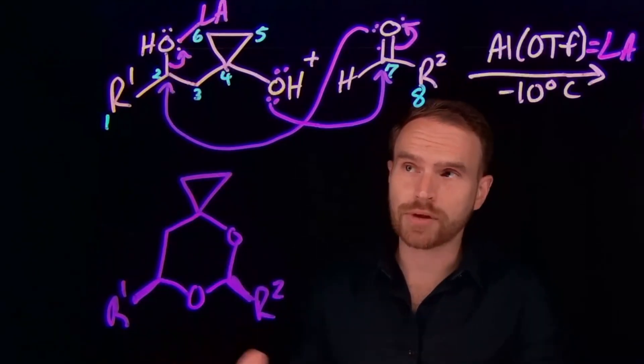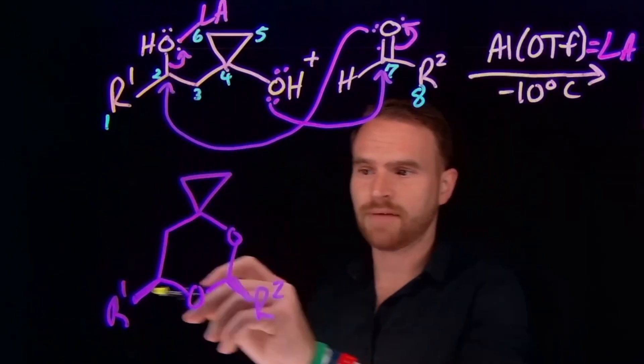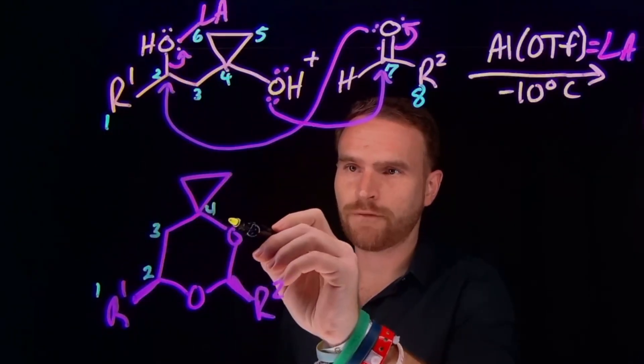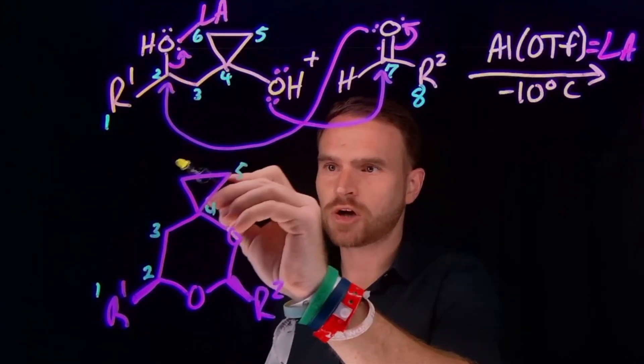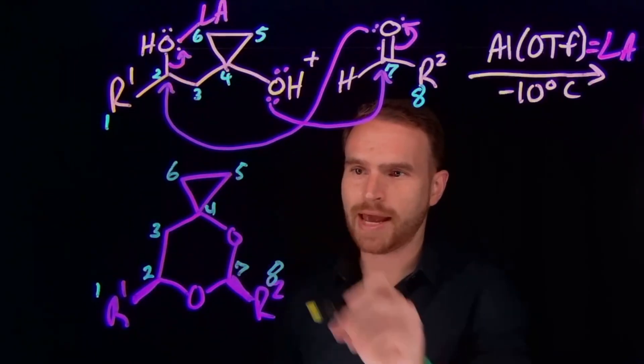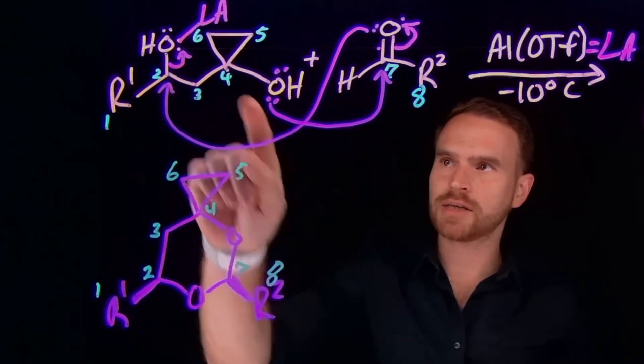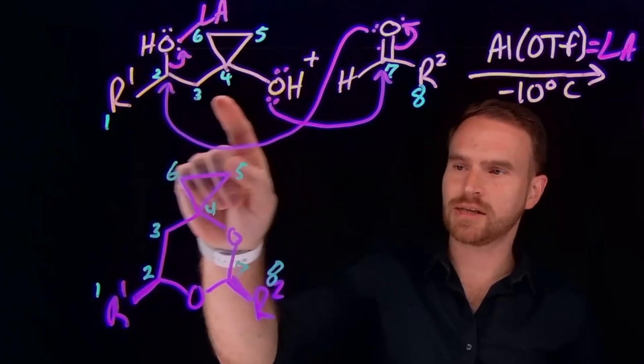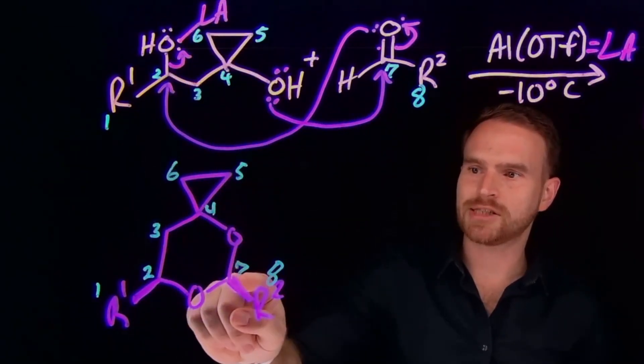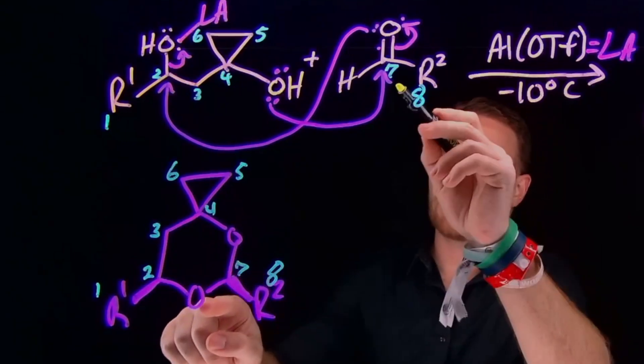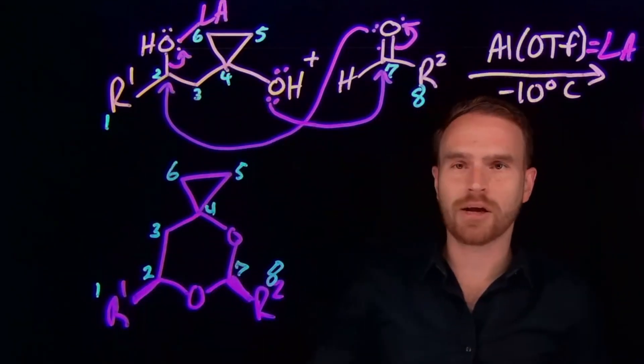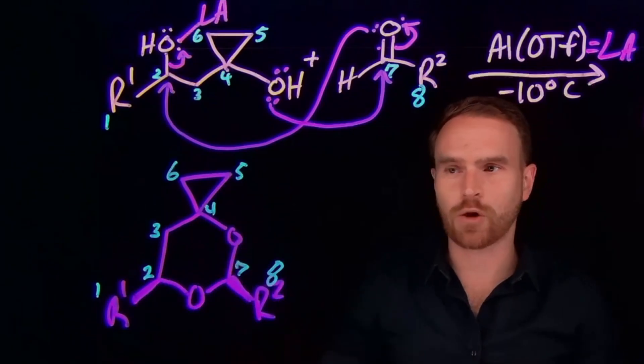So now I can relabel this so you can see where each of these carbons came from so if this was position 1 this is 2 this is 3 this is carbon number 4 this was carbon number 5 this was carbon number 6 and this carbon is number 7 and this carbon is number 8 so as you can see the oxygen which we had directly adjacent to that cyclopropane ring is located here it attacked carbon number 7 which is why it is attached at this position and the oxygen that was attached to carbon number 7 has attacked carbon number 2 so that's how we ended up with this six-membered ring with this specific orientation.